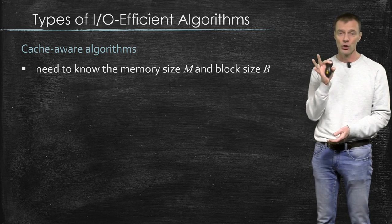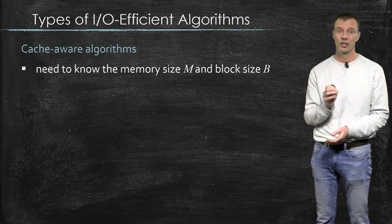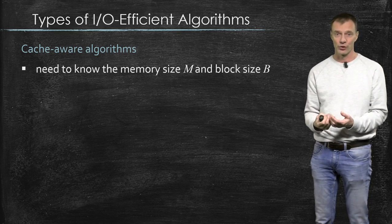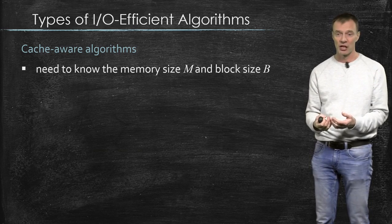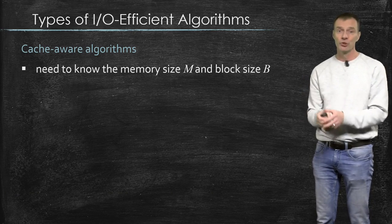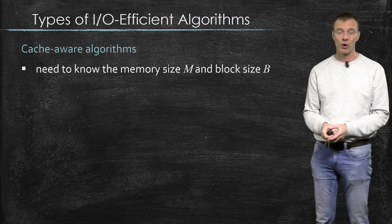So they know the block size B, and they know the internal memory size M, and they somehow use that in the algorithm. By saying something like, put these elements together in one block, and put these other elements together in one block.